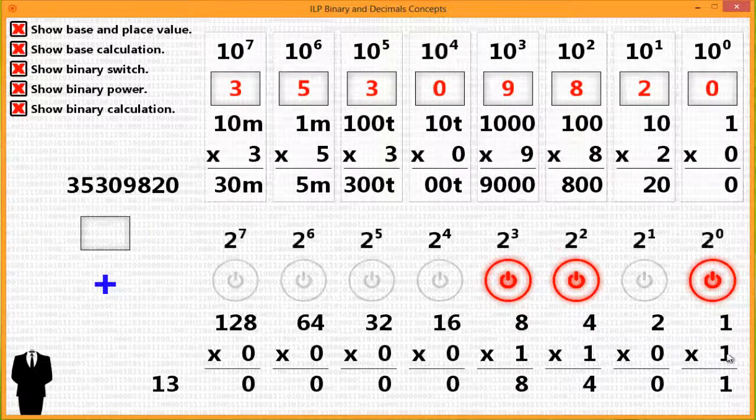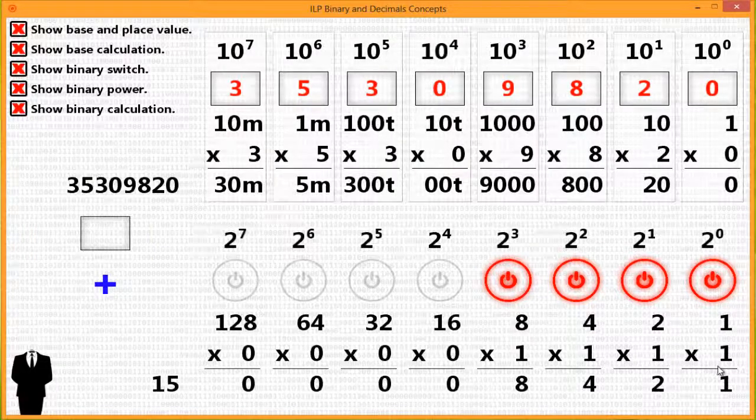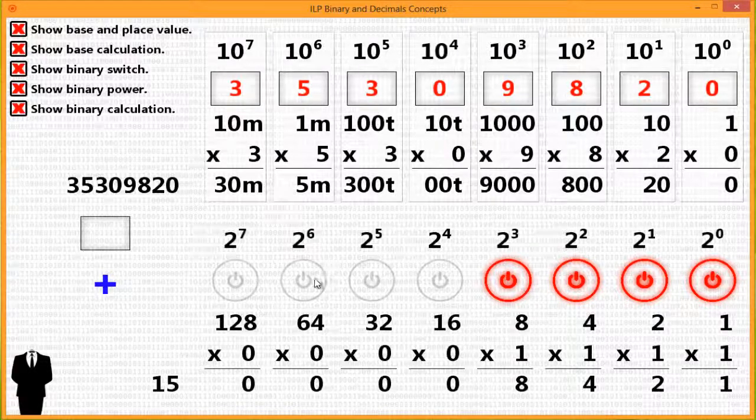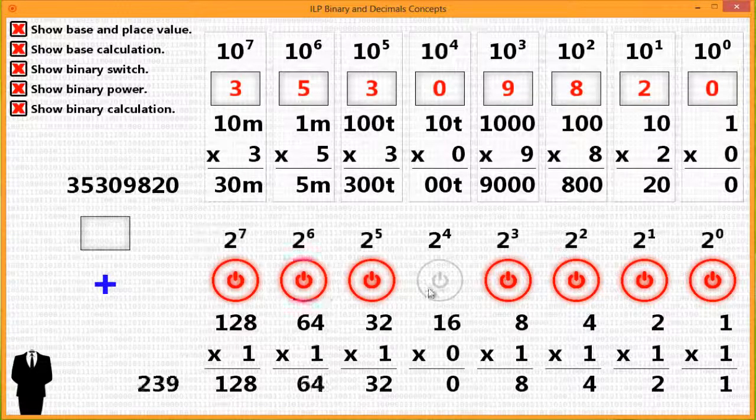So 2 to the 0 power is 1. 2 to the 1 times it by 2 is 2. And you increase it 4, 8, 16, 32, 64, 128. And each time you turn on a switch, it means that that place value has a value.